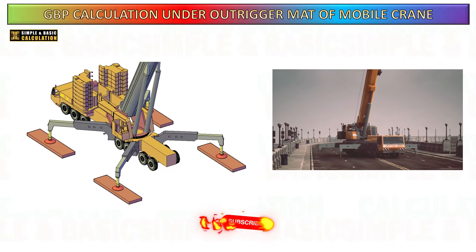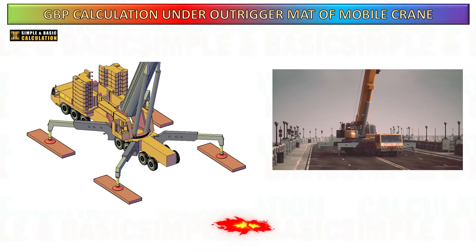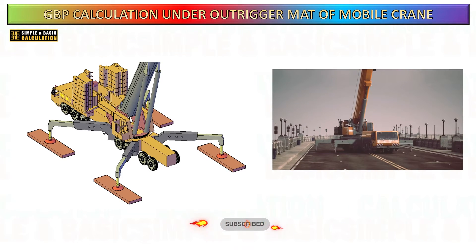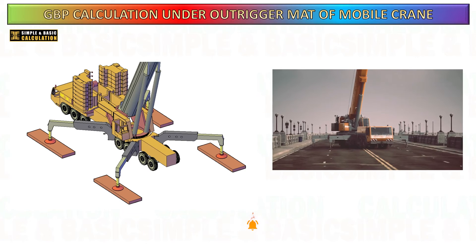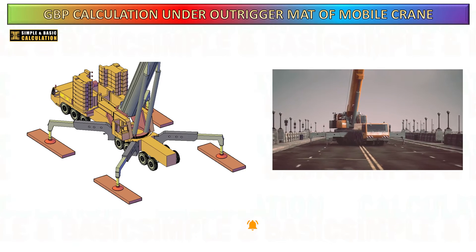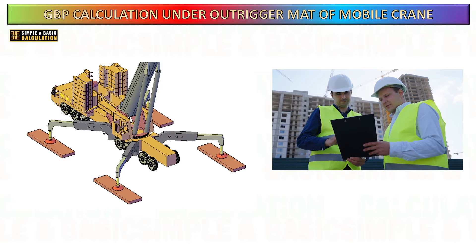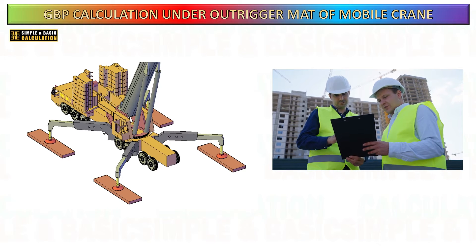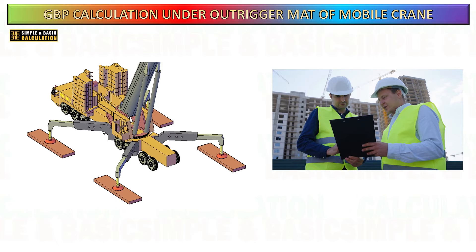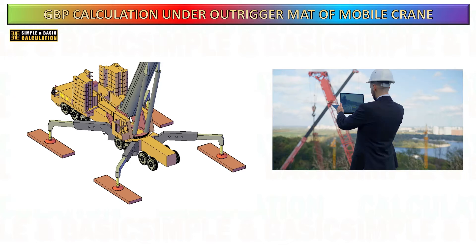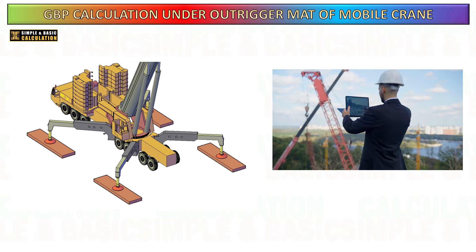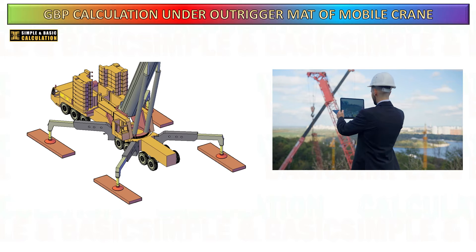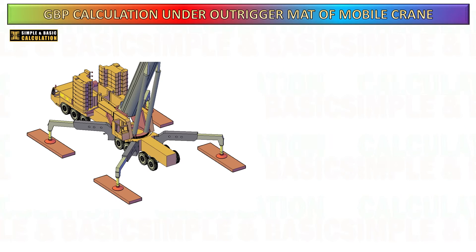Construction projects that involve cranes require careful ground bearing pressure calculations to be done throughout the planning phase. These calculations enable project sites to determine the viability of lifting operations, choose the best sizes and configurations of cranes, and pinpoint the optimal places for crane deployment, better protecting workers, equipment, and the environment.